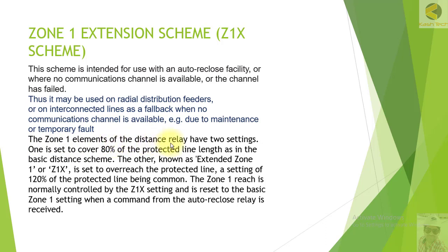The Zone 1 elements of the distance relay have two settings. One is set to cover 80% of the protected line length as in the basic distance scheme. The other, known as Extended Zone 1 or Z1X, is set to overreach the protected line — a setting of 120% of the protected line being common. The Zone 1 reach is normally controlled by Z1X settings and is reset to basic Zone 1 settings when a command from the auto-reclose trip or release is received.